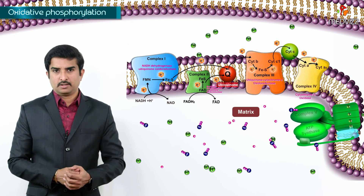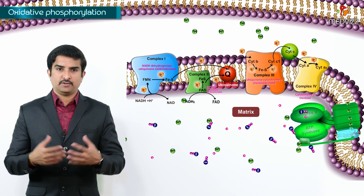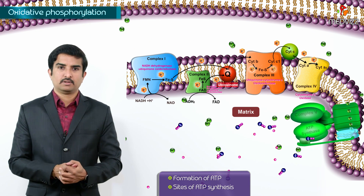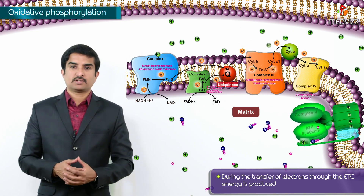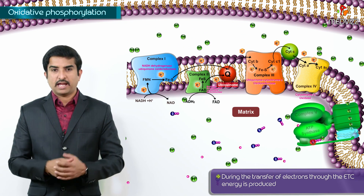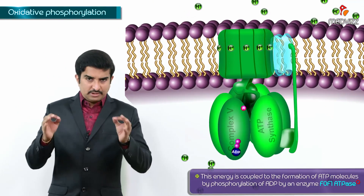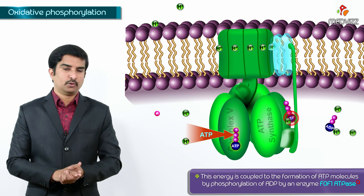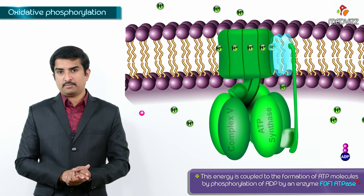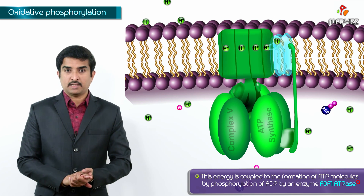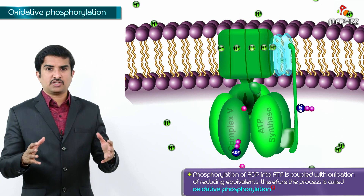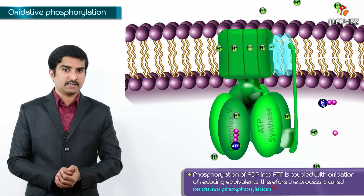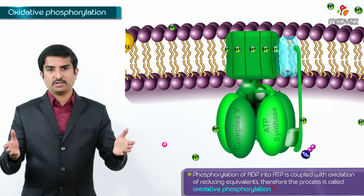Oxidative phosphorylation. In oxidative phosphorylation, we are going to talk about the formation of ATP and the sites of ATP synthesis. During the transfer of electrons through the electron transport chain, energy is produced. This energy is coupled to the formation of ATP by phosphorylation of ADP by an enzyme FOF1ATPase. The phosphorylation of ADP into ATP is coupled with oxidation of reducing equivalents. Therefore, the process is called oxidative phosphorylation.